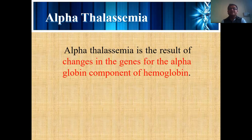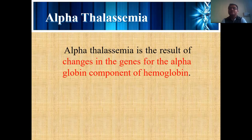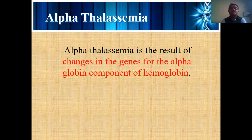In Alpha Thalassemia, the genes are totally changed — specifically, the genes for the alpha globulin component of hemoglobin are altered. The form of hemoglobin required for blood synthesis is not formed; instead, another type of hemoglobin is produced that is not suitable for blood synthesis.